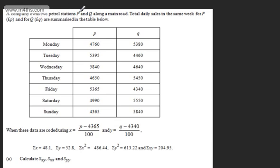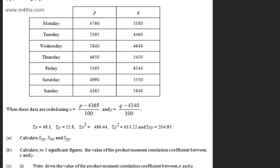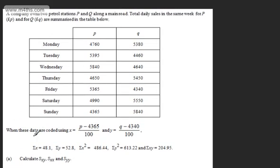We're told a company owns two petrol stations, P and Q, along a main road. Total daily sales in the same week for P, which is p pounds, and for Q, q pounds, are summarised in the table. When these data are coded using x equals p minus 4365 over 100, and y equals q minus 4340 over 100, the sum of x is 48.1, the sum of y is 52.8, the sum of x squared is 486.44, the sum of y squared is 613.22, and the sum of xy is 204.95.